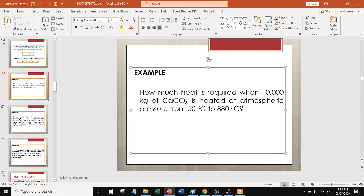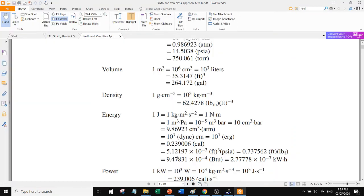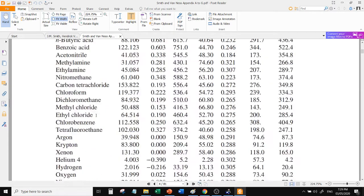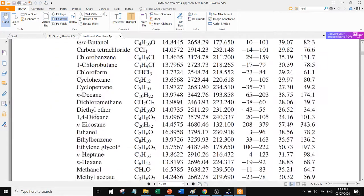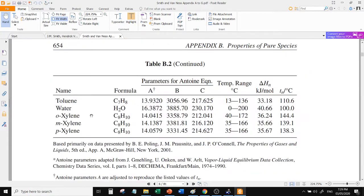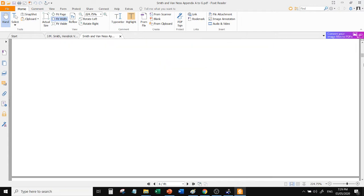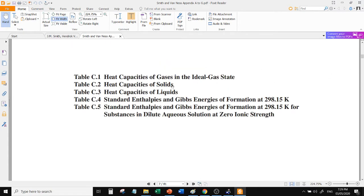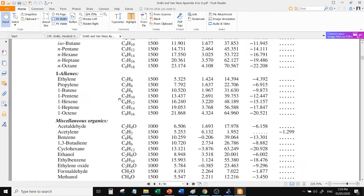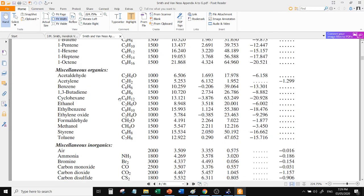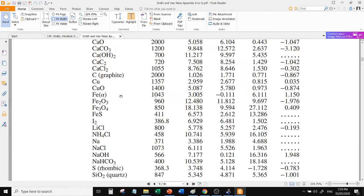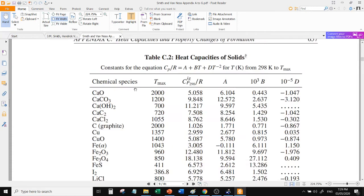So, what equation can we use? When it's like that, we can use the equation. Let's assume it's behaving as... Let's open the appendix. Heat capacities for solids. Heat capacities, right? For solids. There, calcium carbonate.